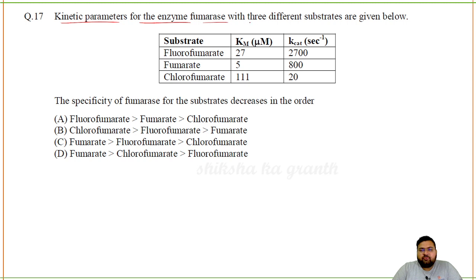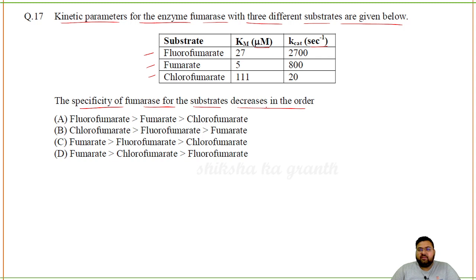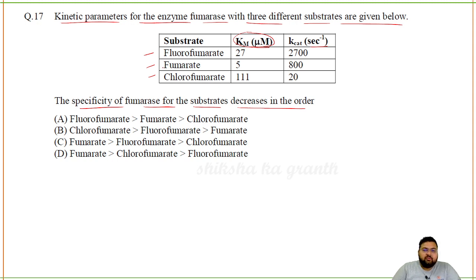Kinetic parameters for fumarase with three substrates — fluorofumarate, fumarate, and chlorofumarate — are given with Km and Kcat values. The specificity of fumarase for these substrates: specificity is determined by affinity (lower Km = higher affinity = more specific). Fumarate has the lowest Km so it is most specific. Among the other two, fluorofumarate (Km 27) is more specific than chlorofumarate (Km 111). The correct order is fumarate > fluorofumarate > chlorofumarate, option C.